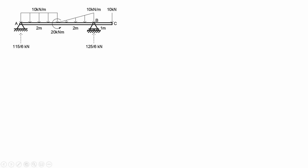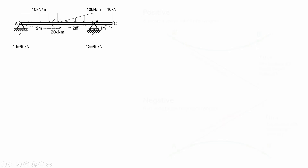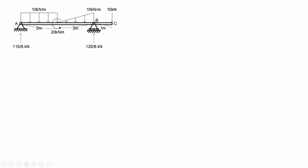The second step is to draw the assumption of the elastic curve. You can check if your assumption is correct depending on the sign of the tangential deviations. The third step is to assign a moment center at which you think would be the easiest to draw the moment diagram by parts.